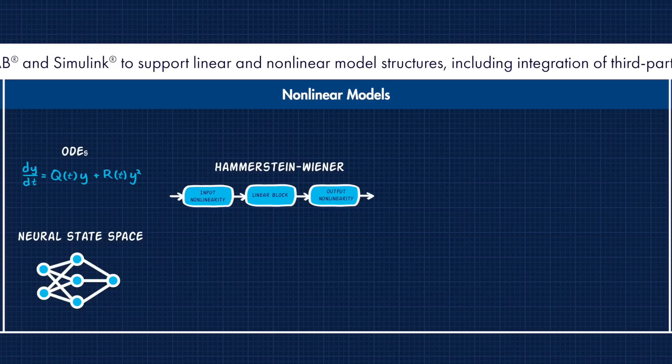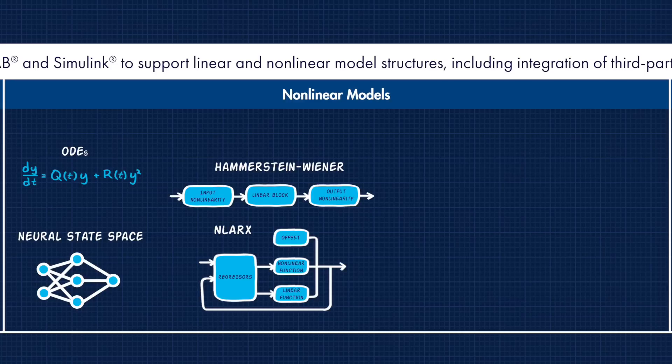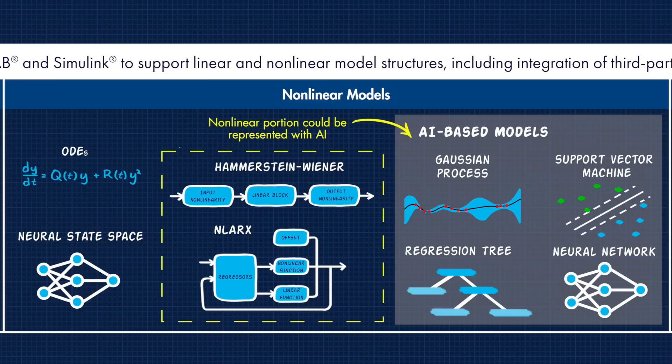There are also some structures like Hammerstein-Wiener and nonlinear ARX that combine linear models with nonlinear components. These are useful because they provide the best of both worlds, where you model the linear components of your system with simpler equations, and then capture the nonlinear portion separately. The nonlinearity could be represented with a number of different structures, like polynomials and dead zones and piecewise linear. But you can also capture the nonlinearity with AI-based structures, such as Gaussian processes, support vector machines, regression trees, and neural networks.